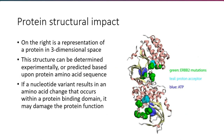If a protein's coding sequence is changed by a variant, that variant may cause changes in the structure of the protein — the protein might be destabilized or might no longer function. There are a number of predictors that have quantified which amino acid changes might damage protein function for reasons related to protein structure. This type of annotation is quite computationally intensive to compute.